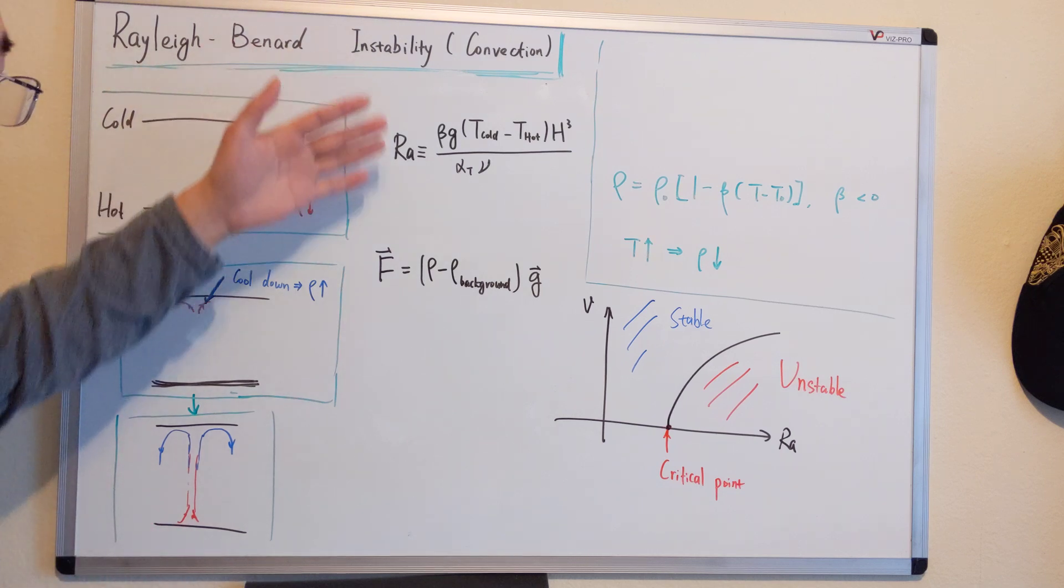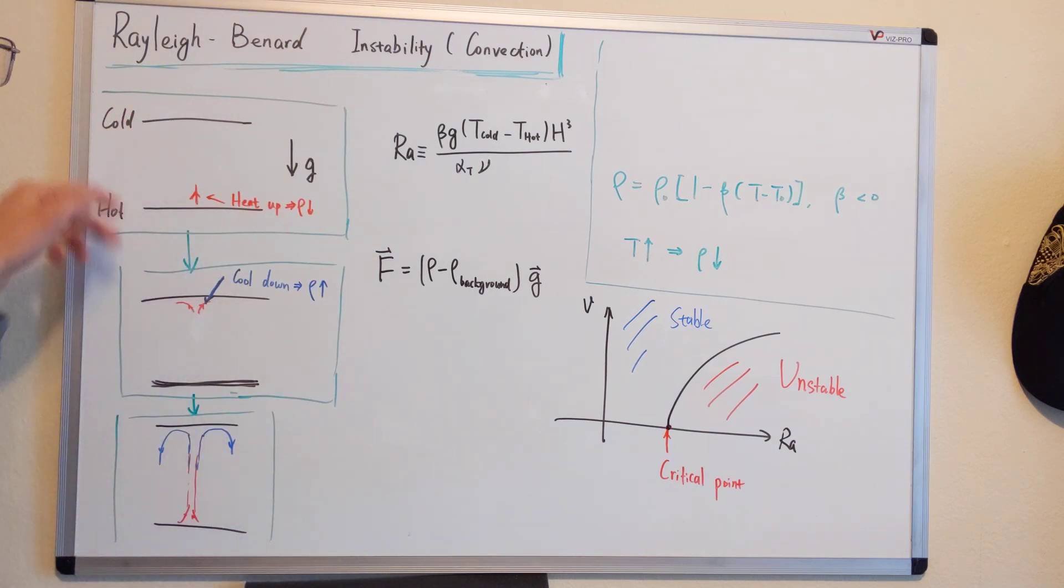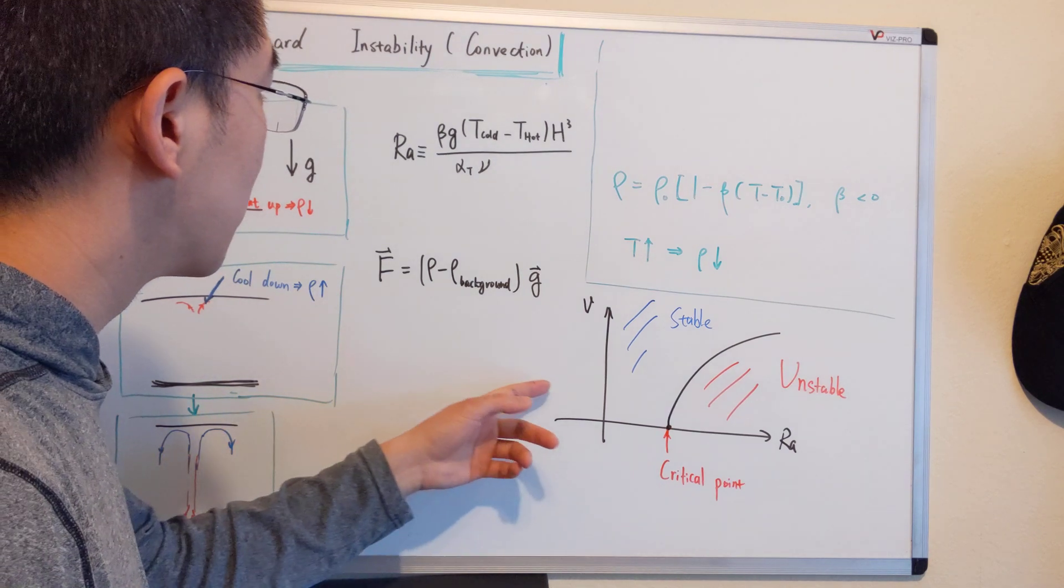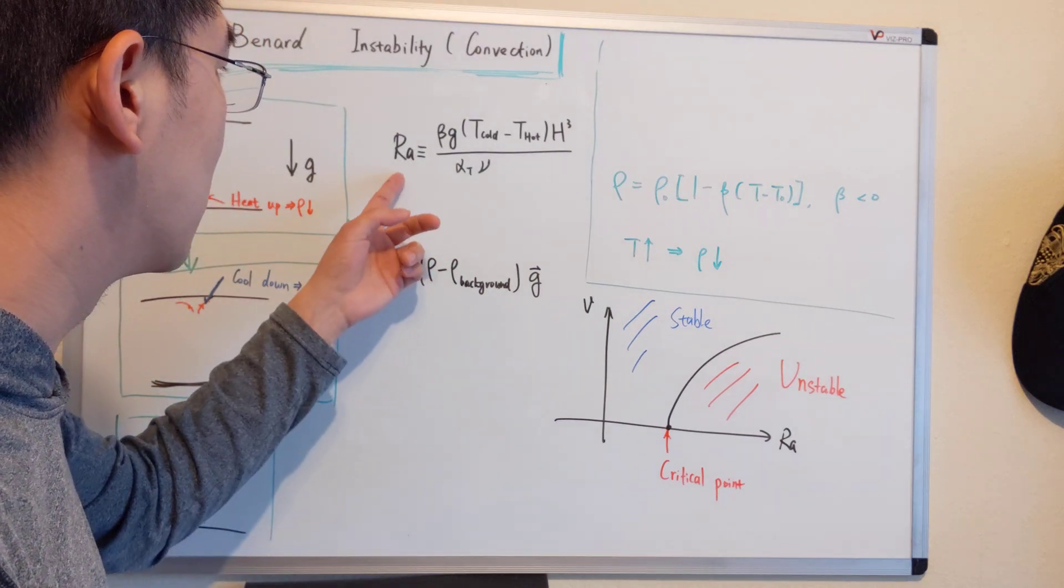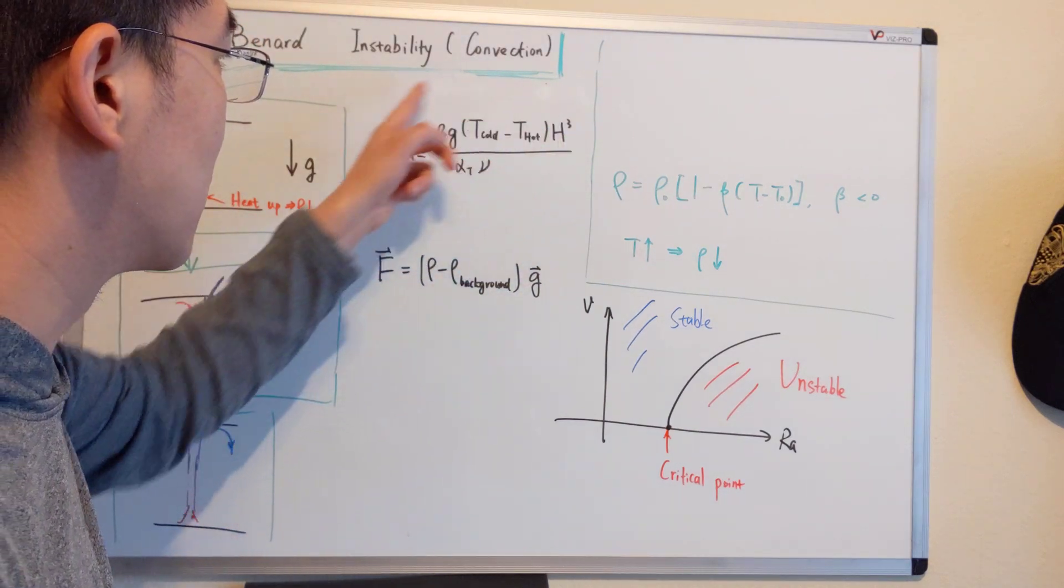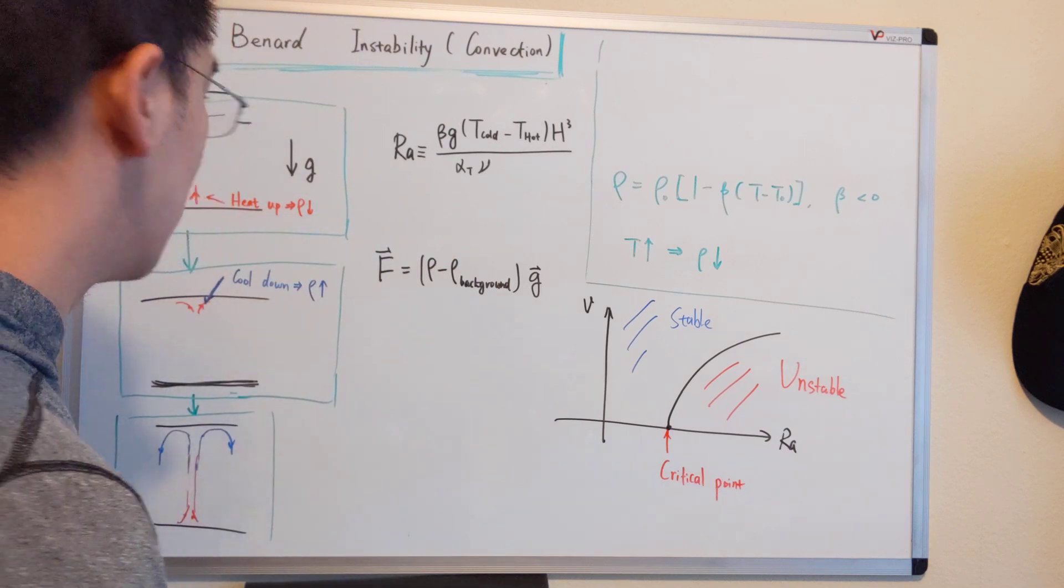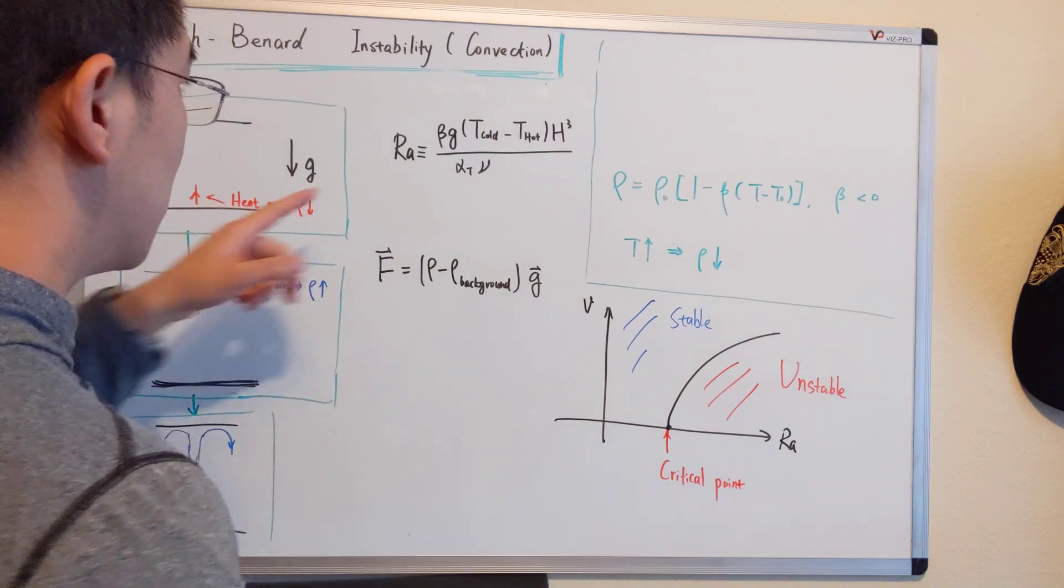And this is the convection that we're seeing, and this type of phenomenon is called Rayleigh-Bernard convection. So from a more analytical point, I would like to point out that this is the Rayleigh number.